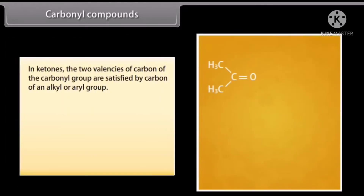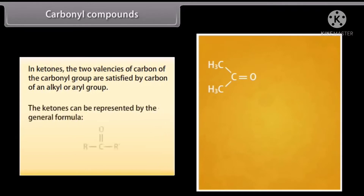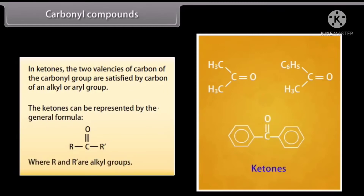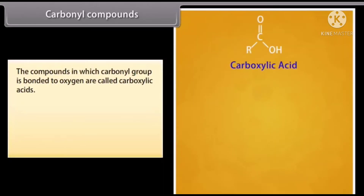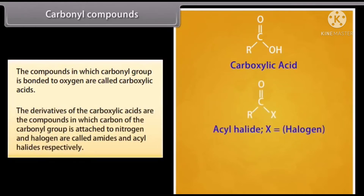In ketones, the two valencies of carbon of the carbonyl group are satisfied by carbon of an alkyl or aryl group. Ketones can be represented by the general formula R-C(O)-R', where R and R' are alkyl groups. The compounds in which the carbonyl group is bonded to oxygen are called carboxylic acids. The derivatives of carboxylic acids in which the carbonyl carbon is attached to nitrogen or halogen are called amides and acyl halides respectively.